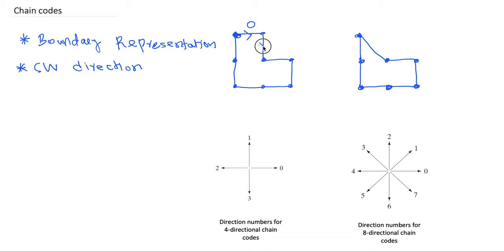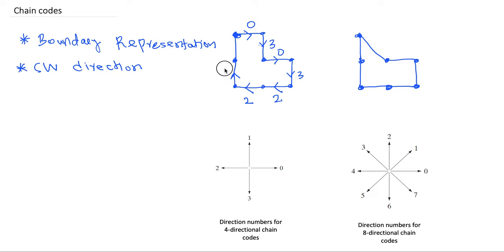The next segment is going down, so I'm writing number three. The next segment is going right, so again zero. Next one is downward, so three. Next we have a segment going to the left side, coded with number two. Again a straight-line segment going to the left, so again number two. Then a segment going up, coded with number one. Then again a segment going up, number one. So the chain code for this boundary, starting from the starting point, is: 0, 3, 0, 3, 2, 2, 1, 1.